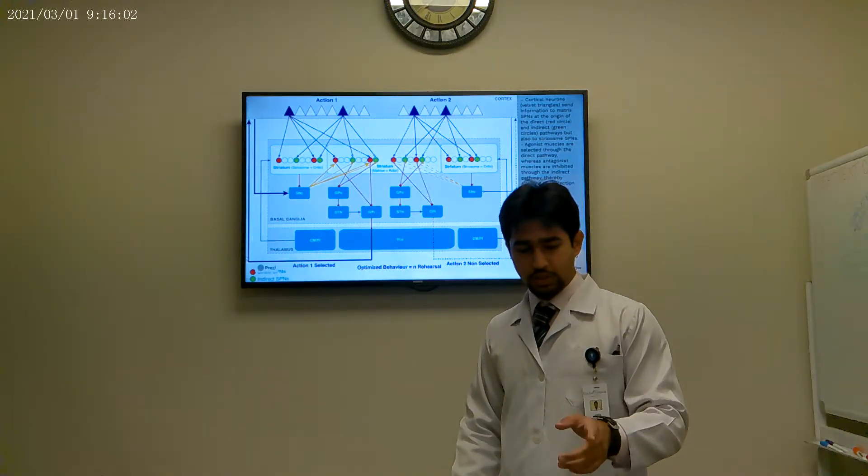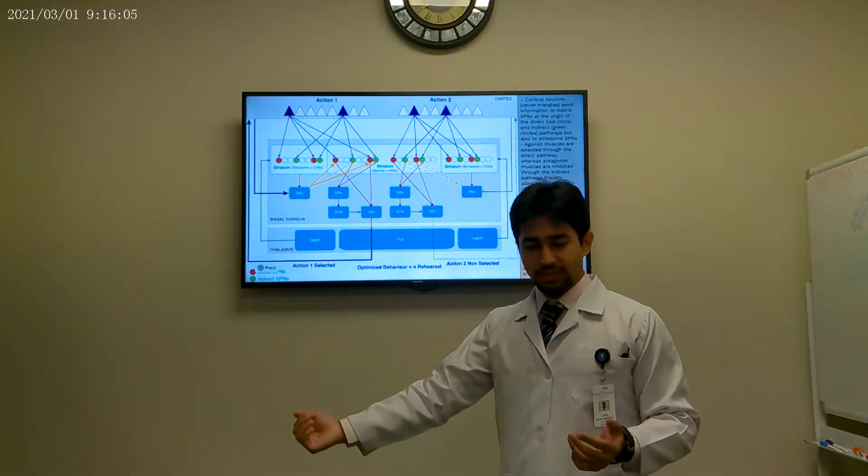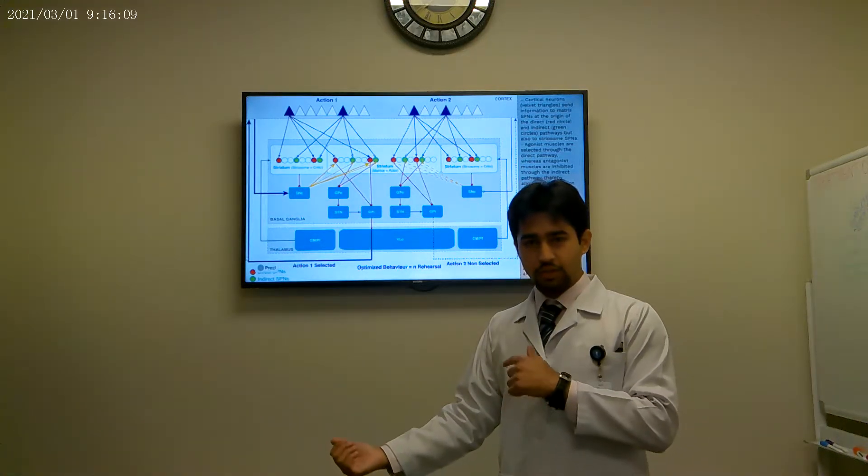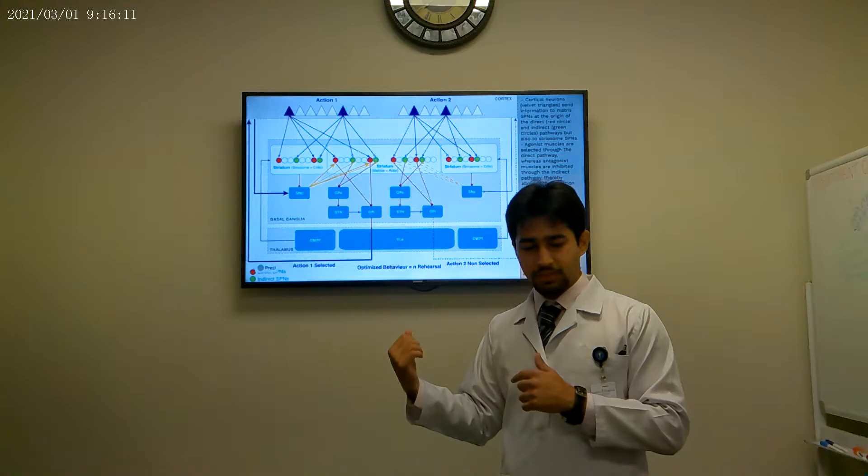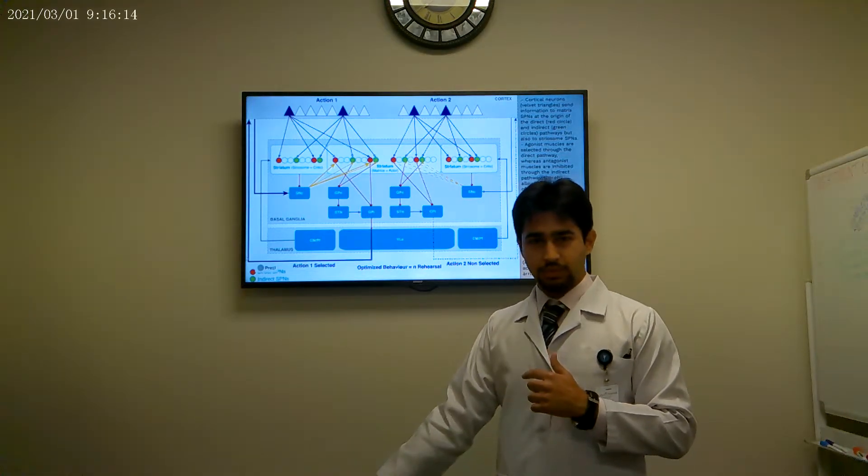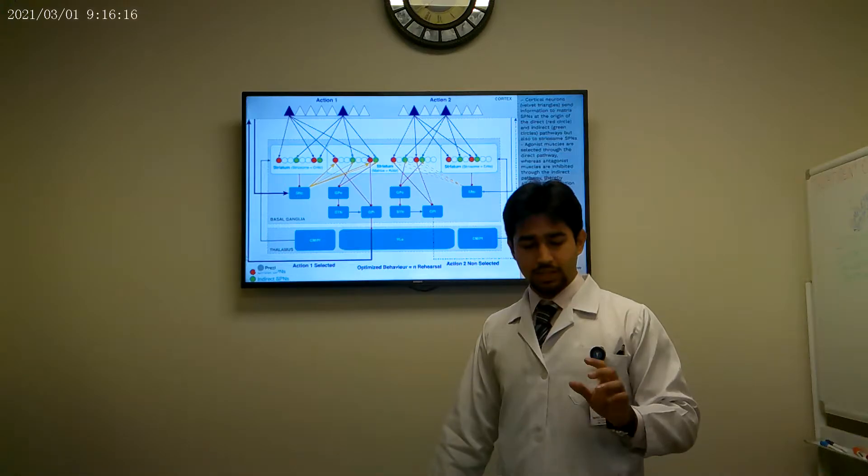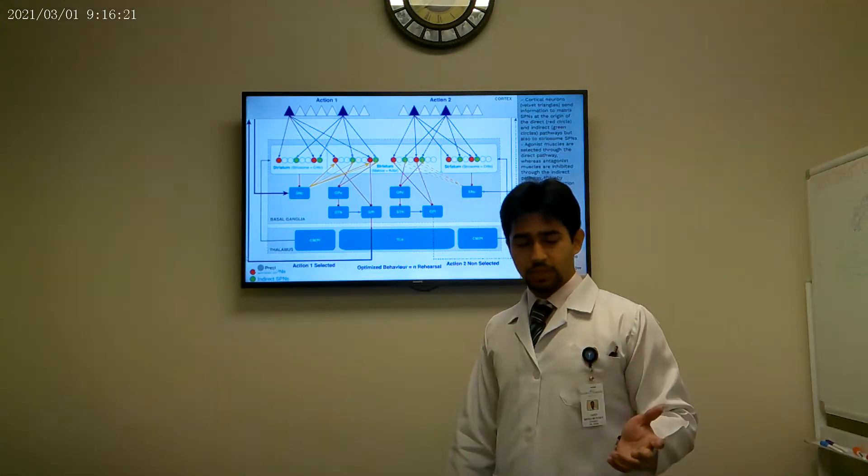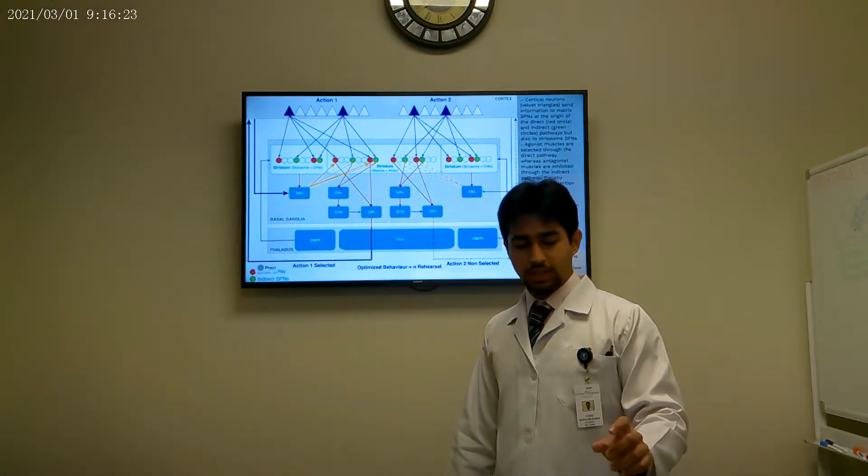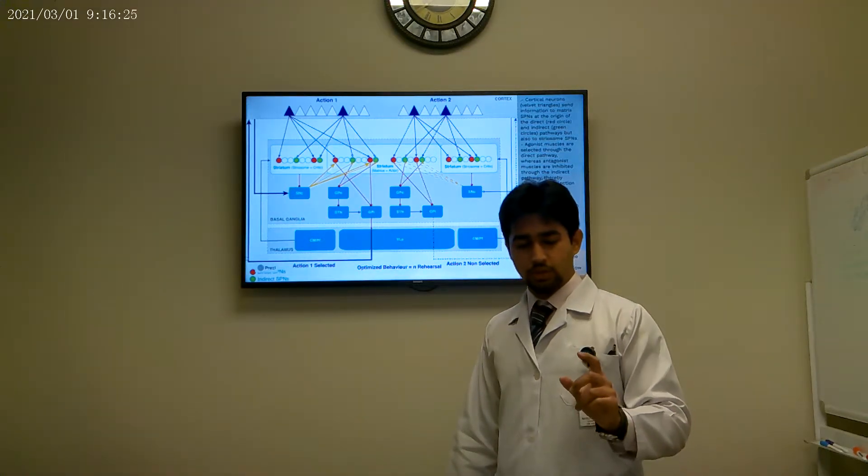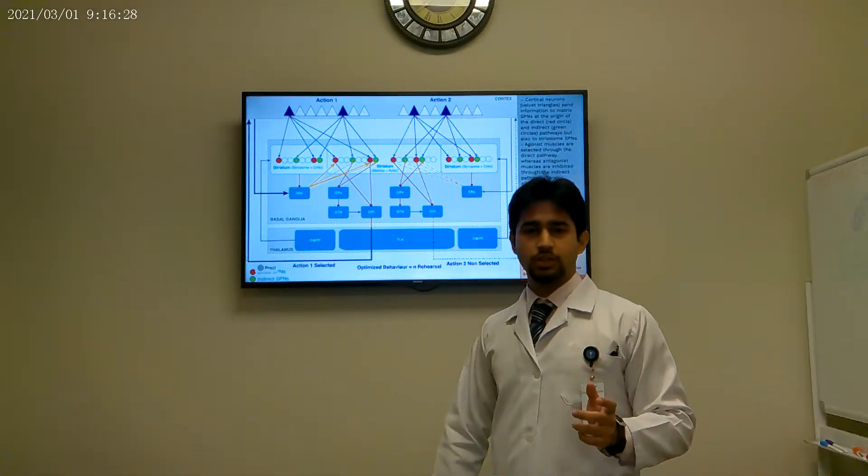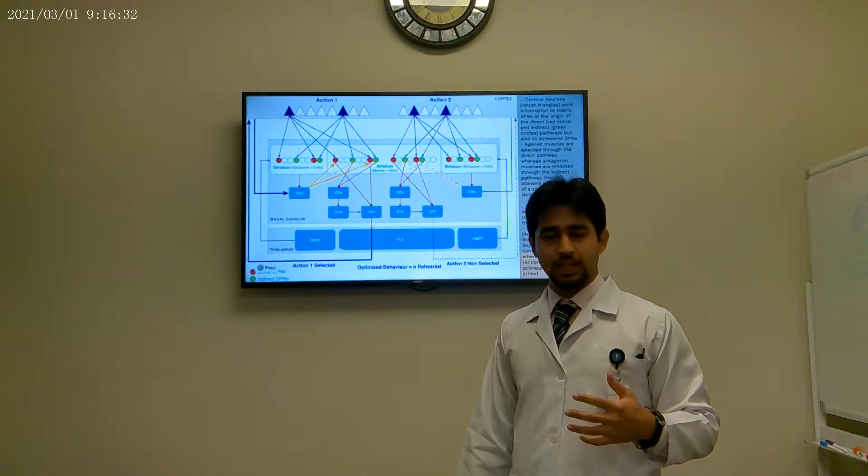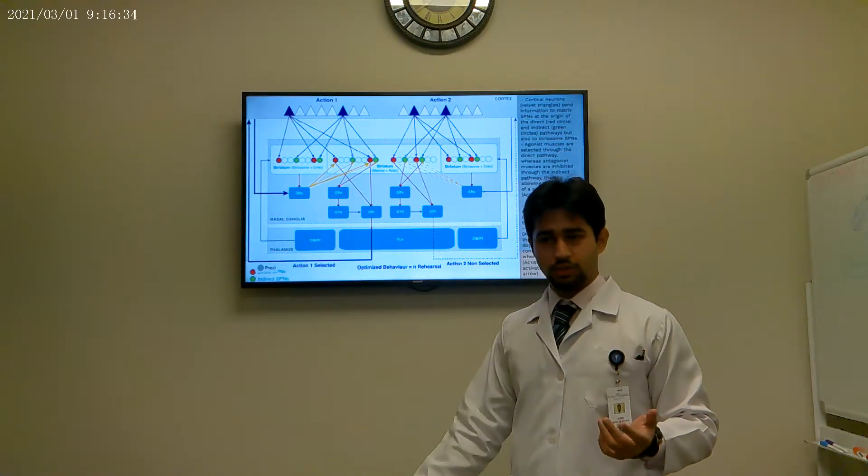This might look a bit detailed, but it's easy to understand once we simplify it. We have two actions going on here, action one and action two. So action one you might think as lifting our dumbbells. In that case, we want to activate our agonist muscles, in this case the biceps, and we want to relax our antagonist muscles, which in this case would be your triceps. We have circuits going from the cortex to the basal ganglia, which innervates the direct pathway indicated by the red cross, and which also innervates the indirect pathway, which is your green cross. In this way, we get inputs that cause contraction of the biceps and relaxation of the triceps, and you can do your dumbbell curl.